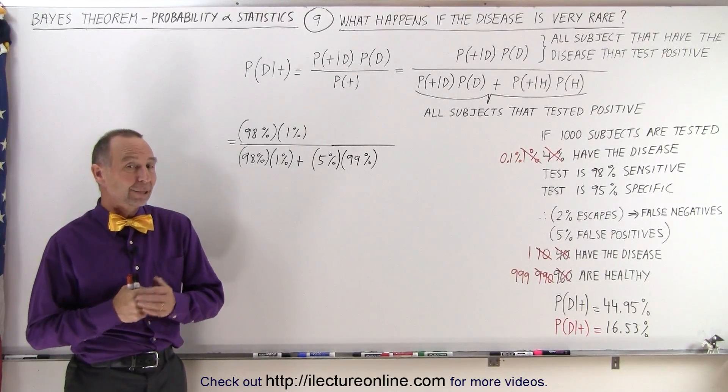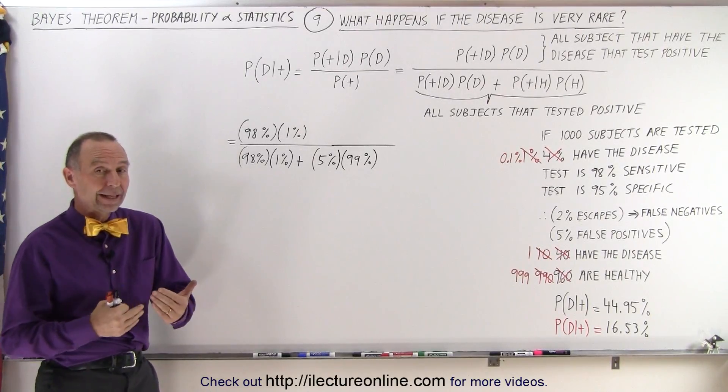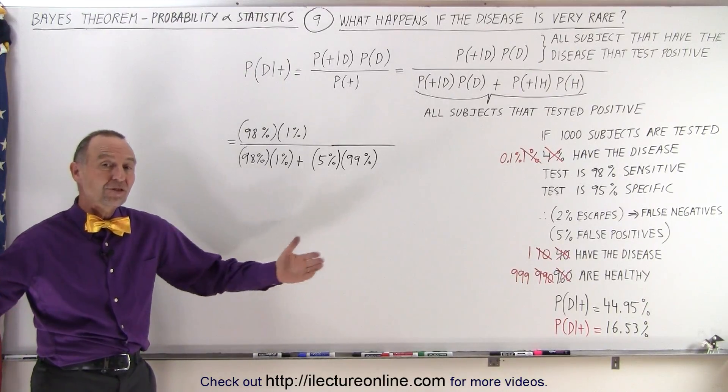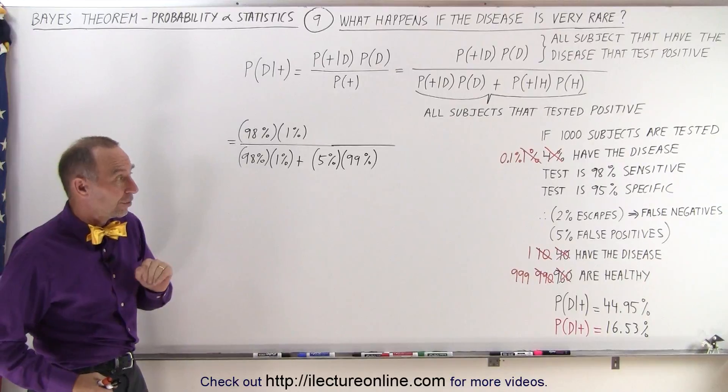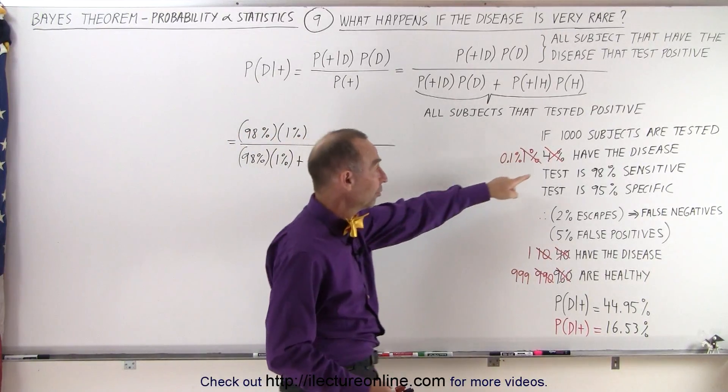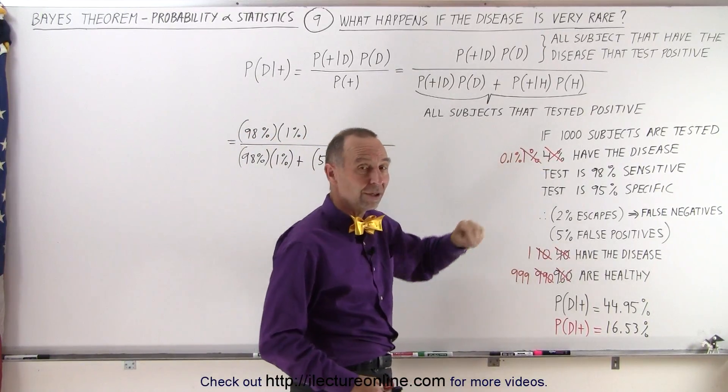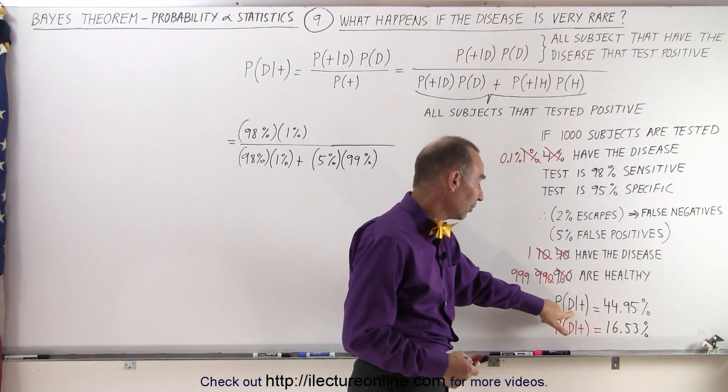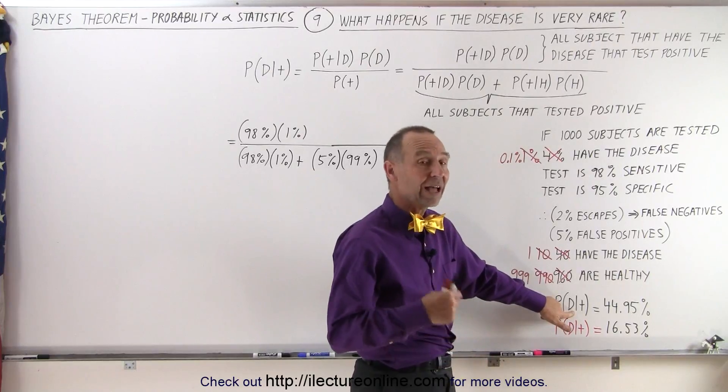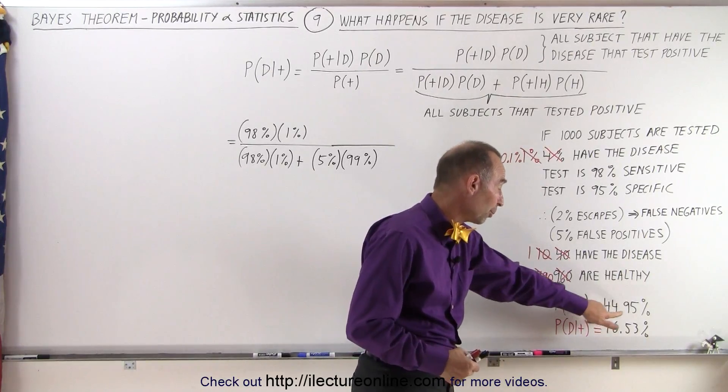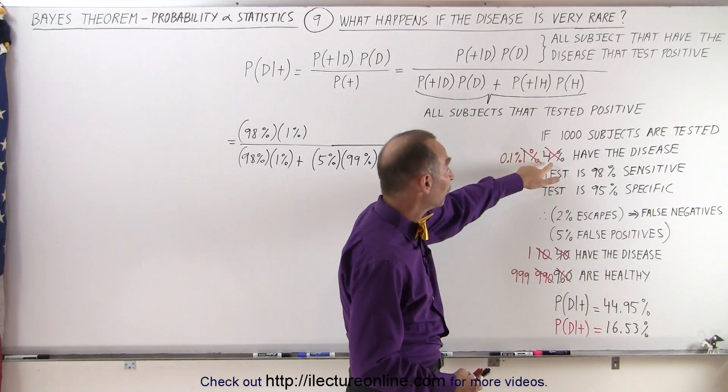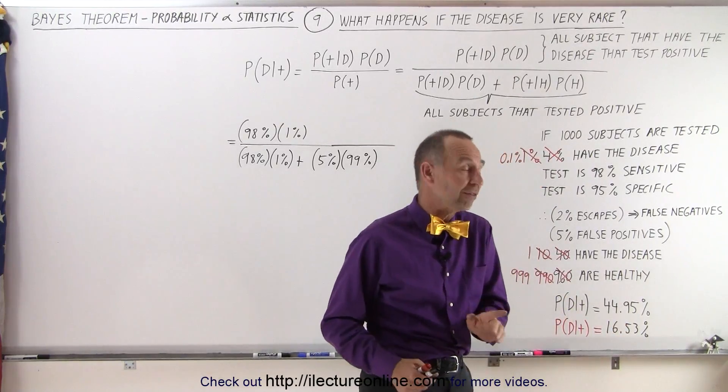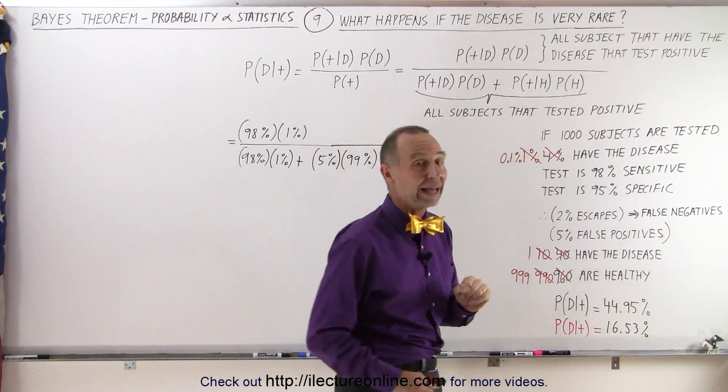Welcome to ElectronLine. In the previous video we discovered that if the incidence of the disease within the population that you're testing drops, from 4% down to 1%, the probability that a subject tested positive would actually have the disease dropped from 44.95% when 40 out of 1000 have the disease to just 16.53% when only 10 out of 1000 have the disease.